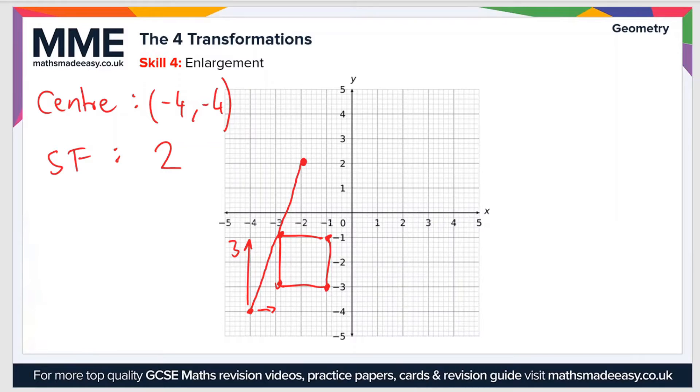If we do the same for the other corner, the bottom right, this time we've gone three across and one up. If we carry on that line three across and one up, that shows us where the other corner will be.